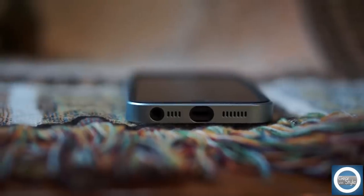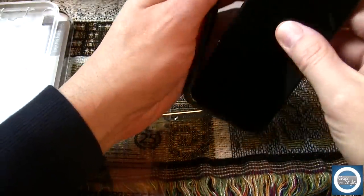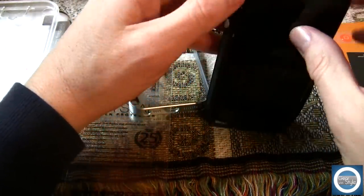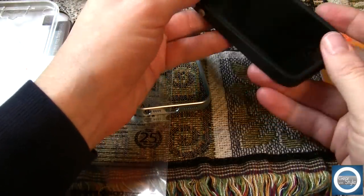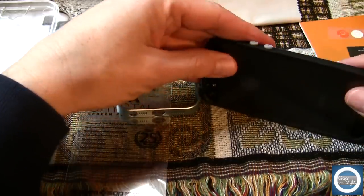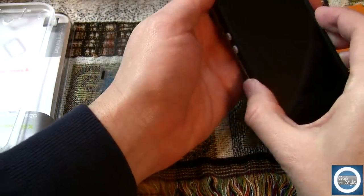Now once you get the case on, it has a very nice adhesive in terms of how well it adheres to the phone itself. The silicone is pretty easy and it is fairly tight. Not that it is difficult to put on but it doesn't just loosely flop around the phone. It does conform to the shape.